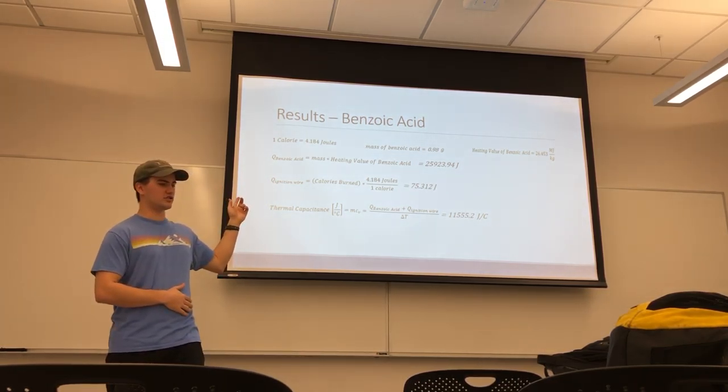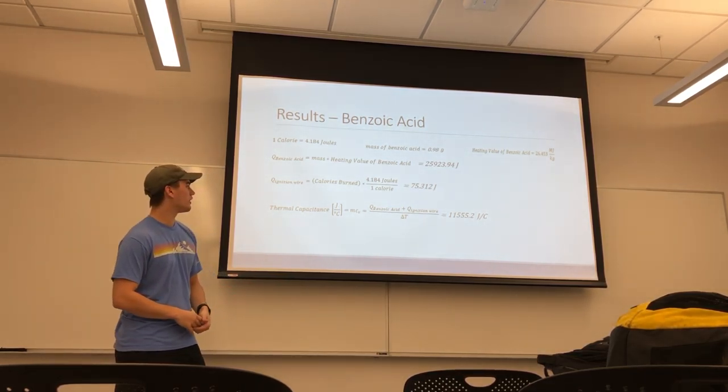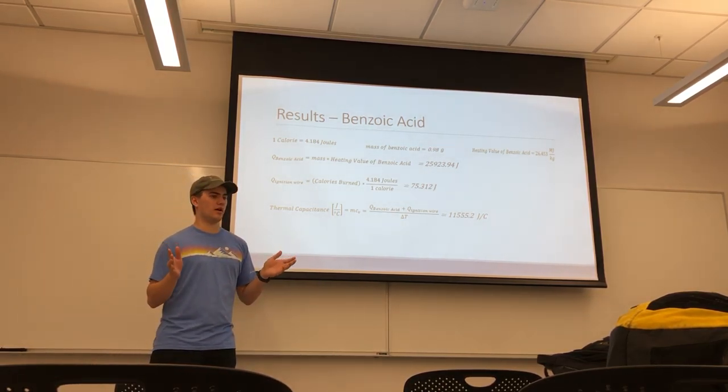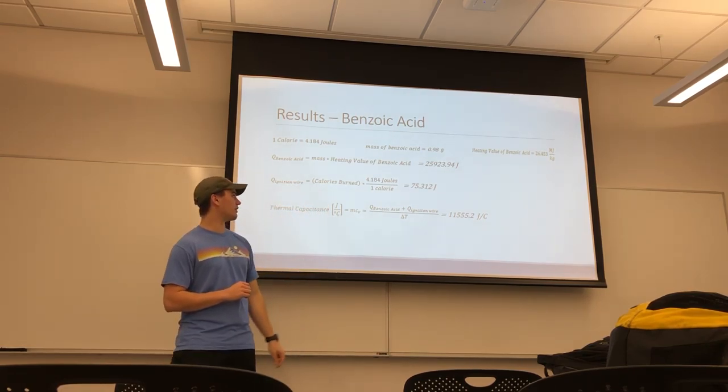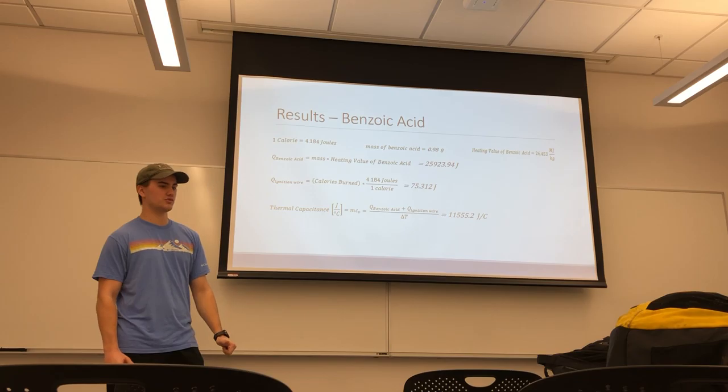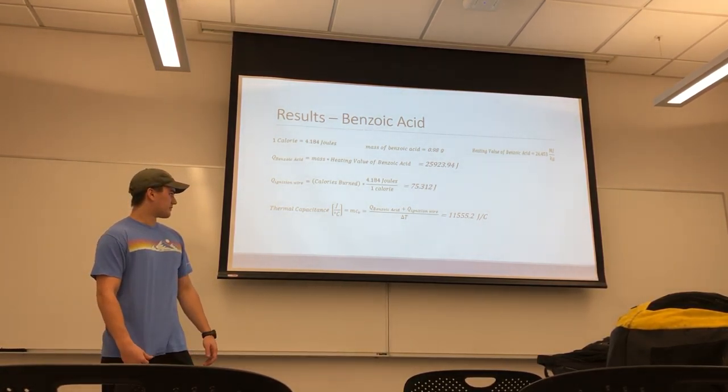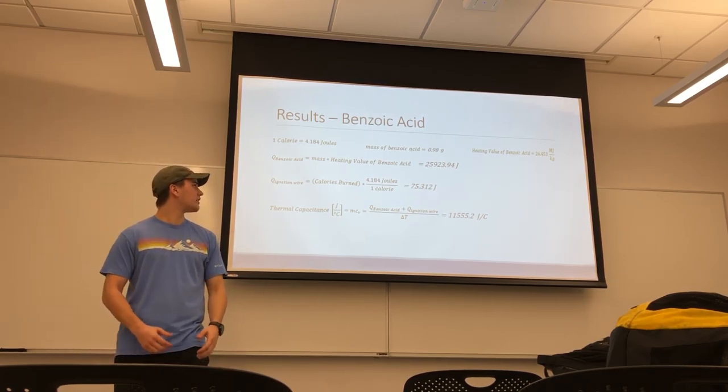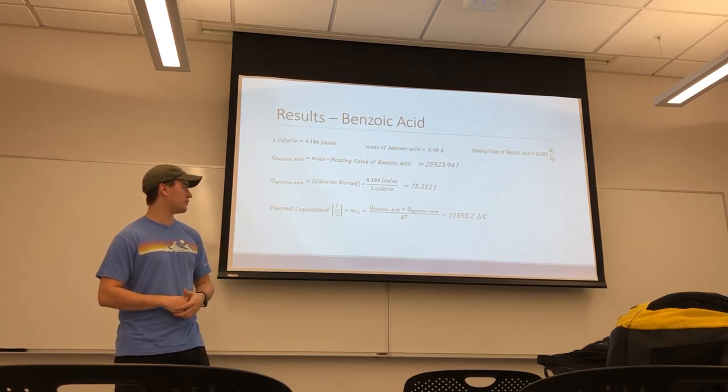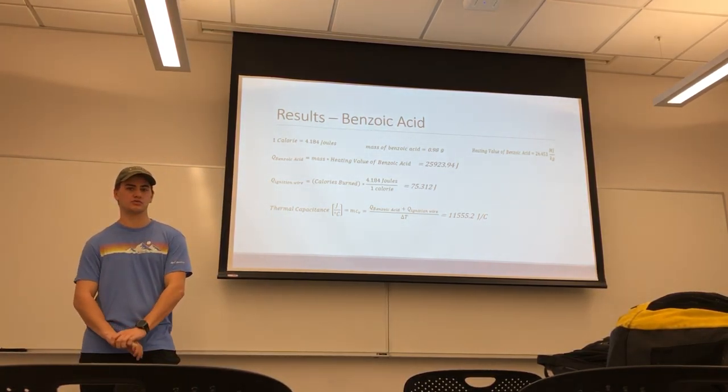And then the heat transfer for the wire, as I mentioned, corresponds to how much of the wire burned. So you would multiply the amount of wire that was burned off by 4.18 joules, and we found that there was a heat transfer of 75 joules that went into burning the wire. And so through this, you can calculate thermal capacitance of the bomb calorimeter, and we found that it was about 11.6 kilojoules per degree Celsius.